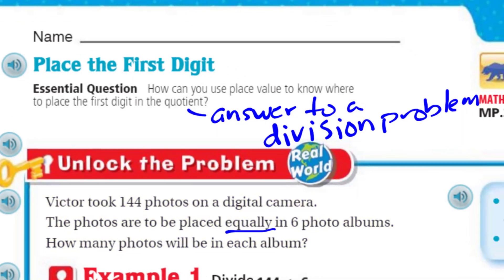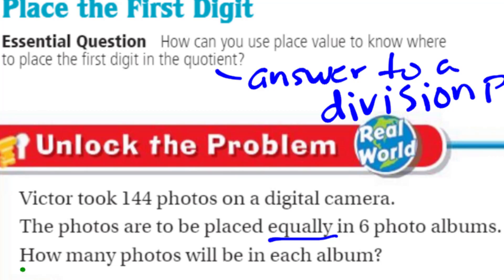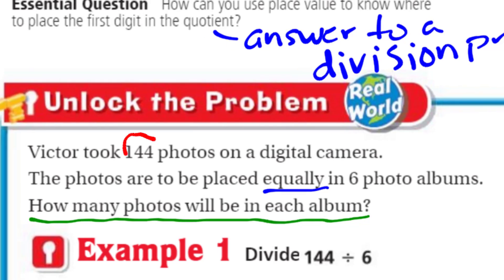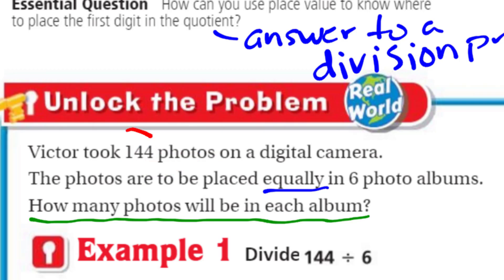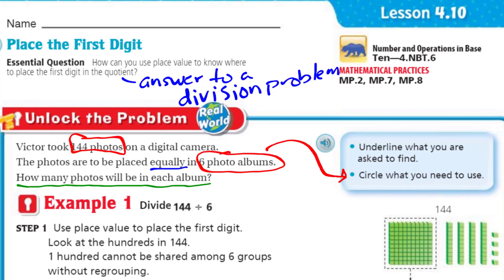Following the GoMath directions: underline what you are asked to find — that would be 'how many photos will be in each album?' And circle what you need to use. I'll be using the 144 photos, and the photos are to be placed equally into six photo albums. So this is the information we're going to use. We underlined, we circled — we're following the directions.